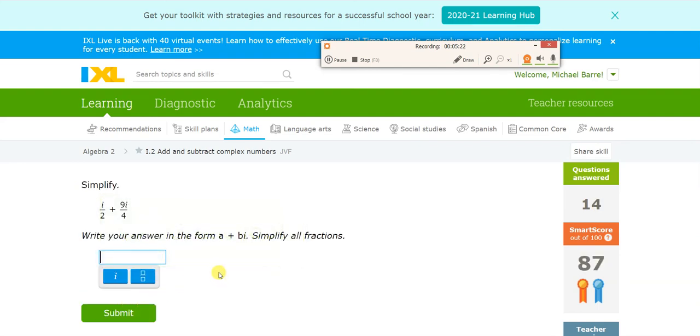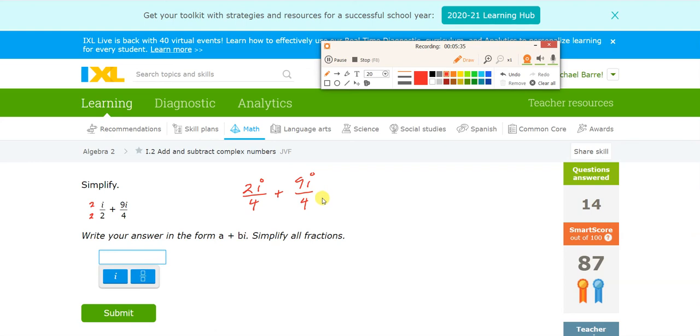Fractions, fractions. Well that's going to be 10i over 4, isn't it? Oh, I've got to get a common denominator. It's going to be 2i over 4 plus 9i over 4, which is going to become 11i over 4.